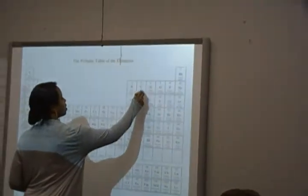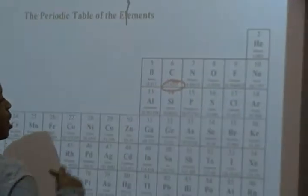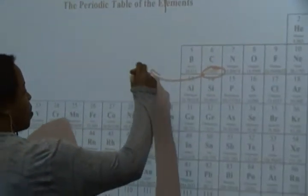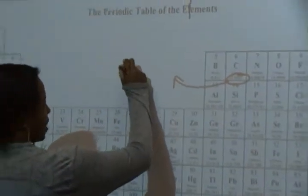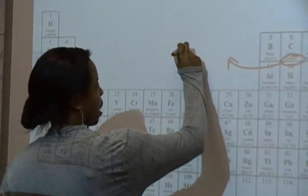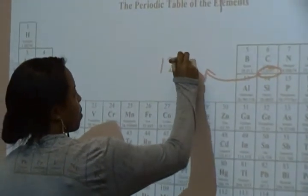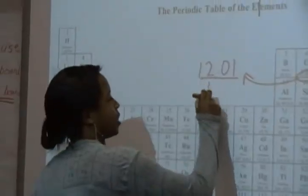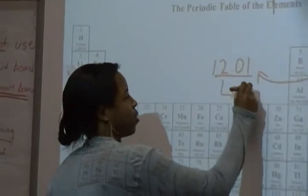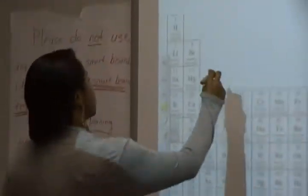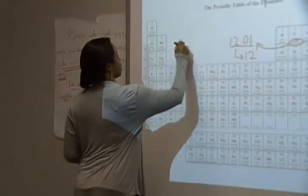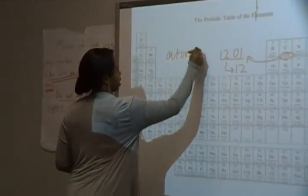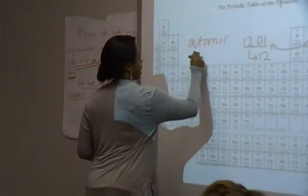Let's circle the atomic mass for carbon, for example. The atomic mass for carbon is 12.01. We always round the atomic mass to just the whole numbers, so it would be 12. We also talked about the atomic mass units for it, which is AMU.